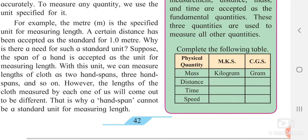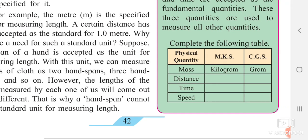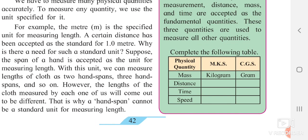A table shows physical quantities in the MKS and CGS systems. Mass is measured in kilogram (MKS) and gram (CGS). Distance is measured in meter (MKS) and centimeter (CGS). Time is measured in seconds in both systems. Speed — which is distance upon time — is measured in kilometer per hour in MKS and meter per second in CGS.